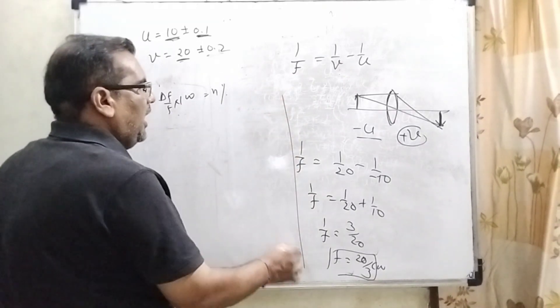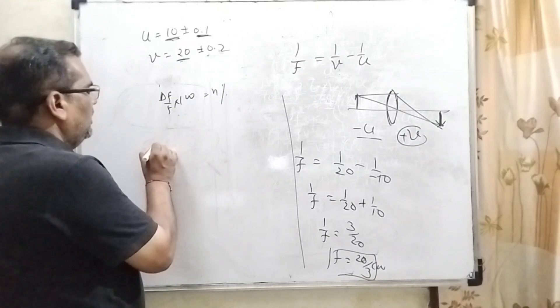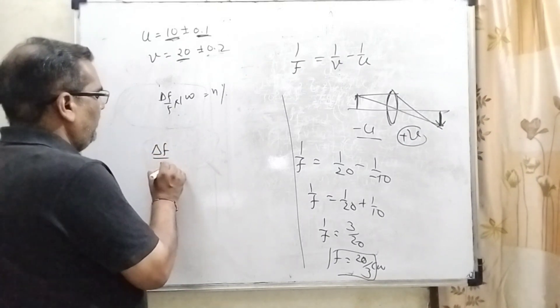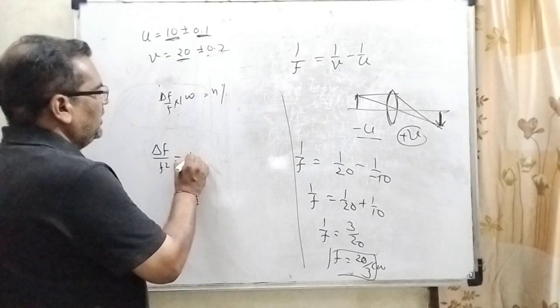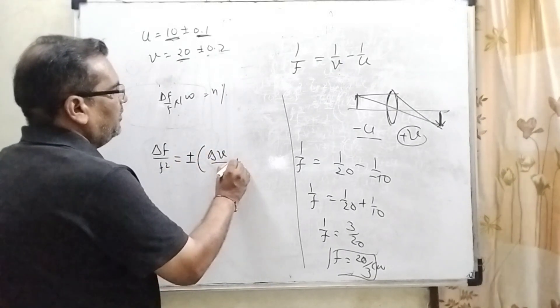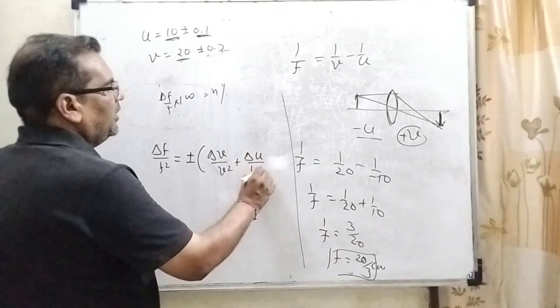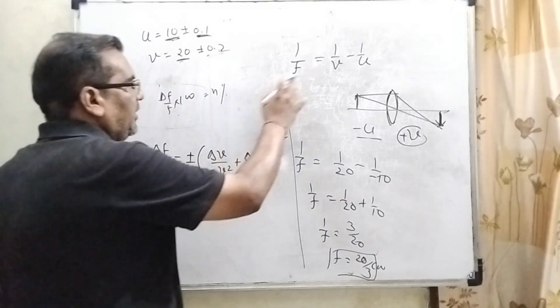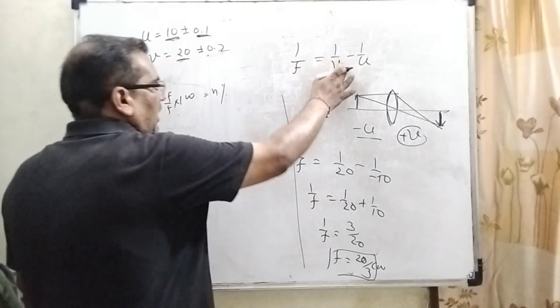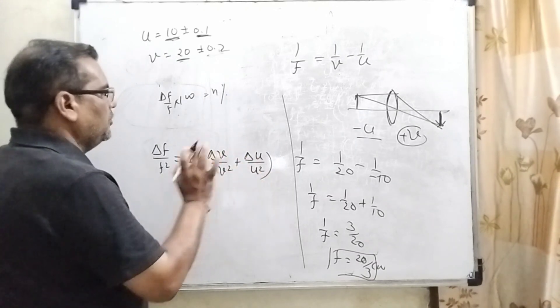Then we are using the error formula by the differential method. Δf/f² = ±Δv/v² + Δu/u². Remember, in the differential method, all these values become positive, so minus minus becomes plus.